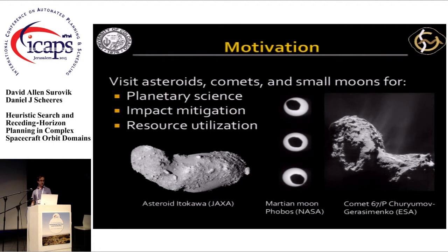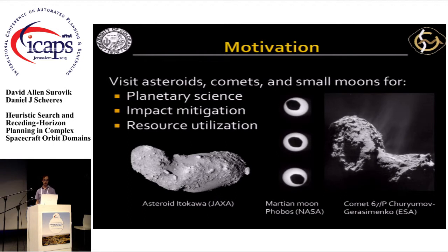If there's an asteroid on an impact course, we need to know how it's going to respond to our methods to mitigate it, and we need to be able to operate well around it. And there are also some companies interested in utilizing resources from these bodies, so there are three good reasons to want to be able to do complex motion in close vicinity to them.